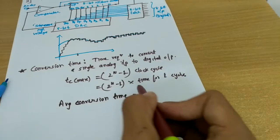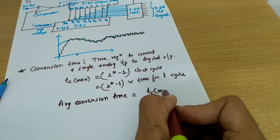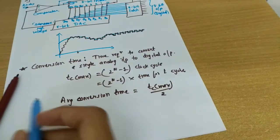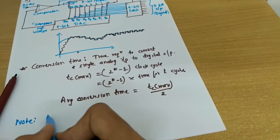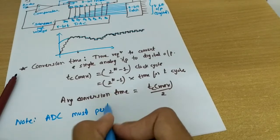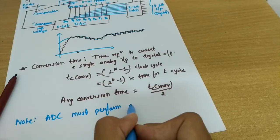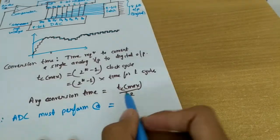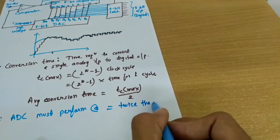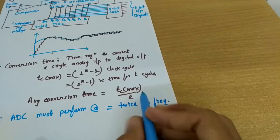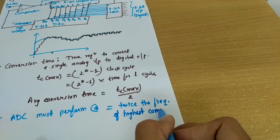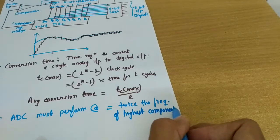Taking the average, the average conversion time is given by Tc max divided by 2. One important point to note is that this ADC must perform at a rate equal to twice the frequency of the highest component of the input — this is the same as the Nyquist rate.